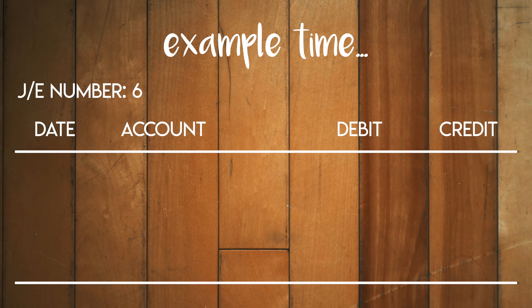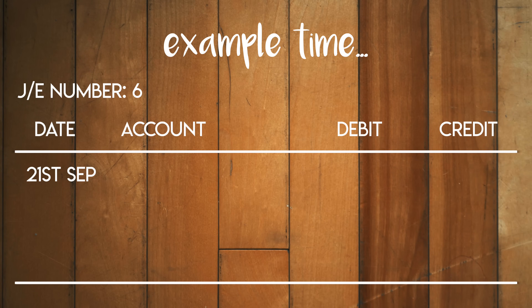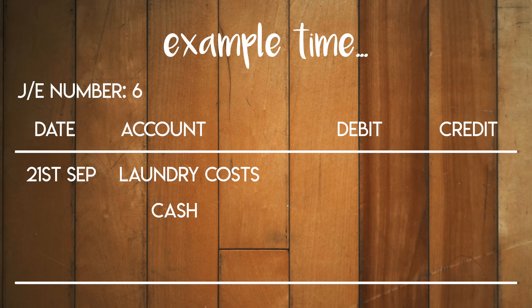The journal entry date should be today, the 21st of September, since that is when the equipment was cleaned — so this transaction is going to show up in the September accounting period. Next we need the account names that are impacted by this journal: laundry costs and cash. Laundry costs are an expense — that's the first E in DEALER, so debits increase it. They charged me $20, so I need to put this number in the debit column.